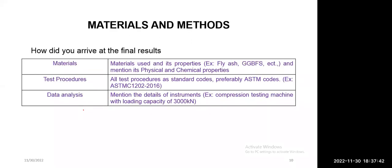Our next section is materials and methods. These are very, very important because any kind of changes in the sample may be due to these materials or maybe due to our experimentation. While writing materials and methods, we need to consider three parameters. First, what materials we have used in our study. You have to mention that material's physical properties, chemical properties, or any microstructural properties if required, and provide all the required data so that the reviewer may assess the trend of your results.